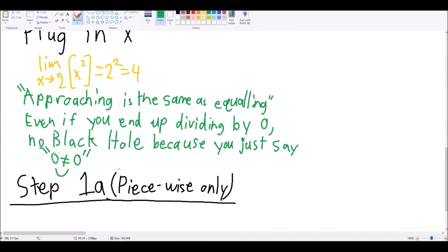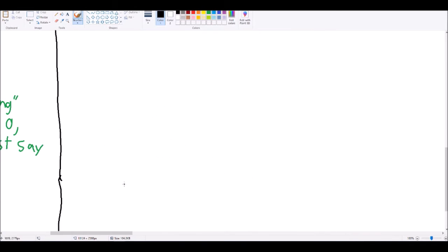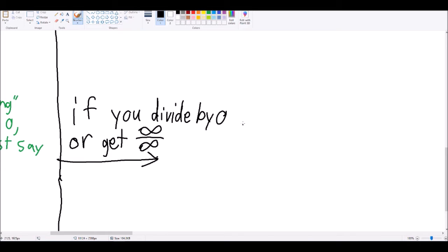Now, here's the thing. If you end up with a situation where you might be dividing by 0 after you take step 1 or step 1a, move on to step 2.